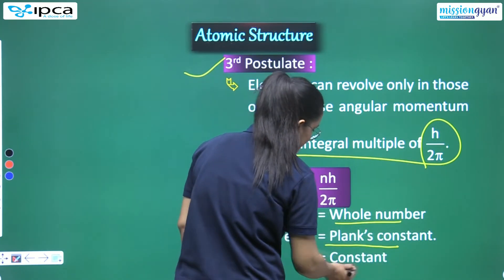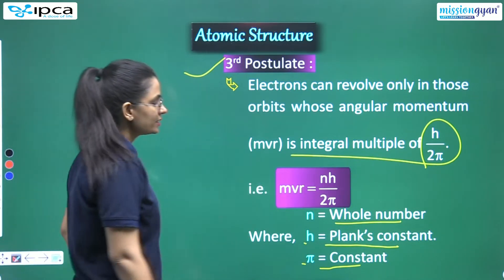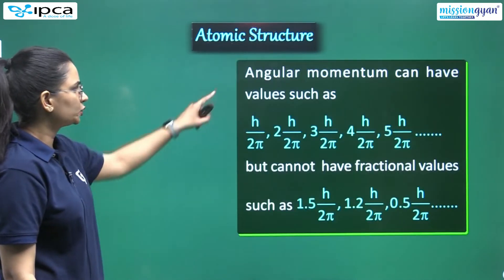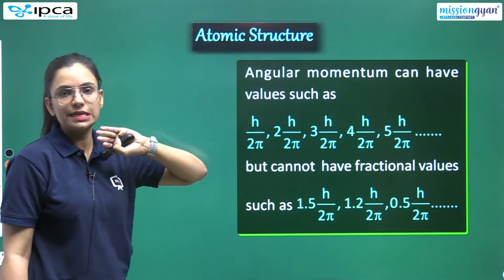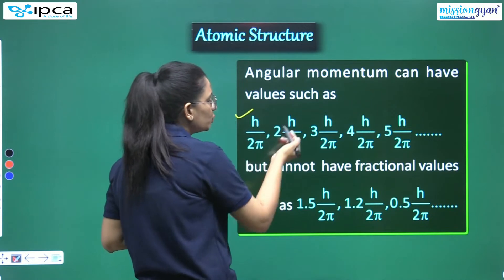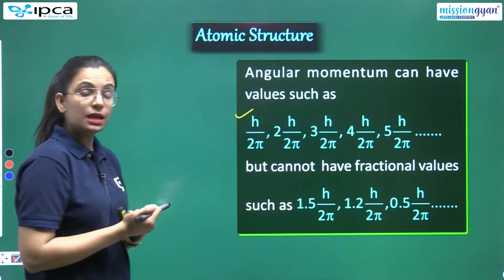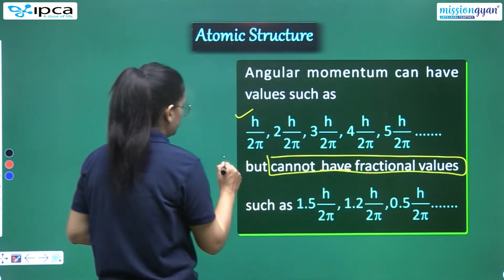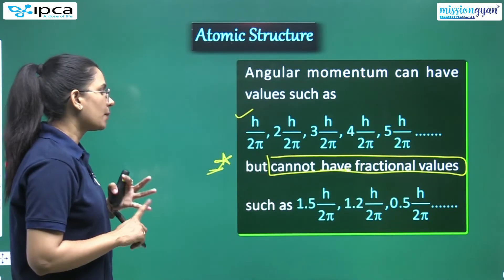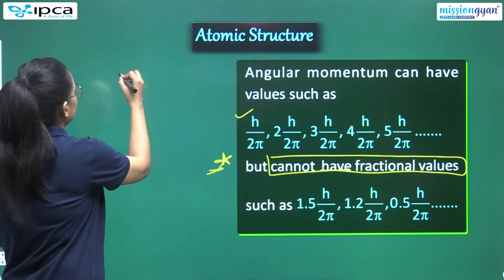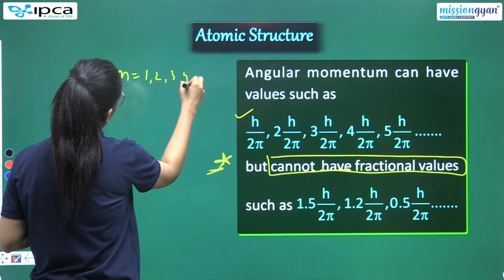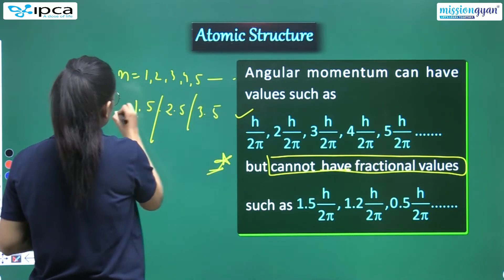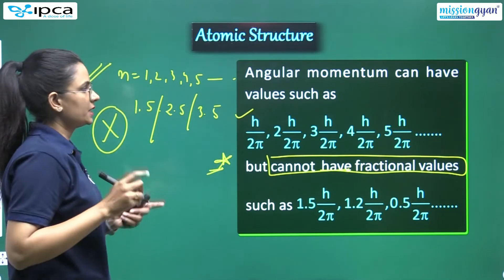Electron can revolve only in those orbits whose angular momentum is integral multiple of h upon 2 pi. Where n is your whole number, h is Planck's constant, pi is constant. So angular momentum values - what type will they be? h upon 2 pi, 2h upon 2 pi, 3h upon 2 pi, 4h and so on. This means they can never be fractional values. Very important. Remember this - you can never write them in fractional values. They are in terms of 1, 2, 3, 4, 5 and so on, but never fractional like 1.5, 2.5, 3.5. These are always integer numbers.